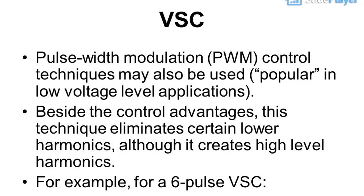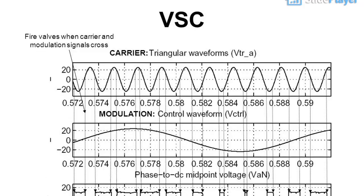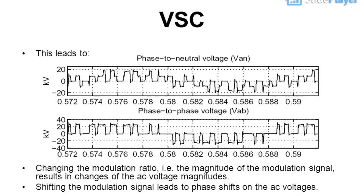For example, for a 6-pulse VSC, fire valves when carrier and modulation signals cross. This leads to: changing the modulation ratio, i.e., the magnitude of the modulation signal, results in changes of the AC voltage magnitudes. Shifting the modulation signal leads to phase shifts on the AC voltages.